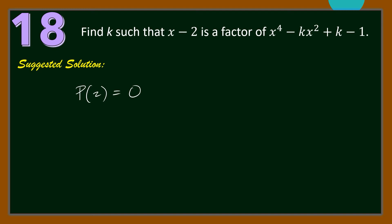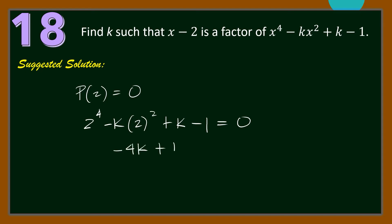So we have 2⁴ − k(2²) + k − 1 = 0. Then 16 − 4k + k − 1 = 0, giving −3k + 15 = 0, so −3k = −15. Dividing both sides by −3, we get k = 5.